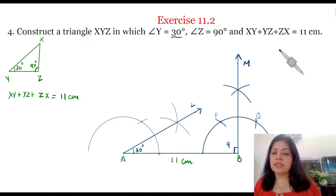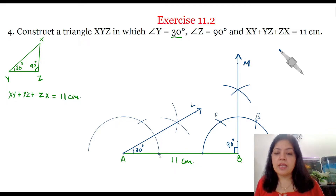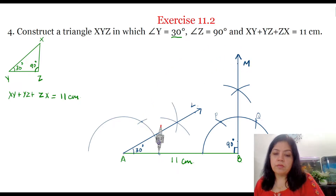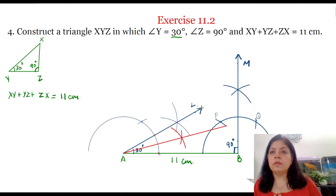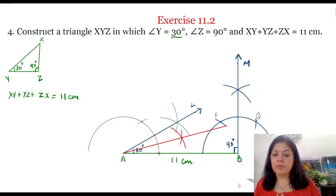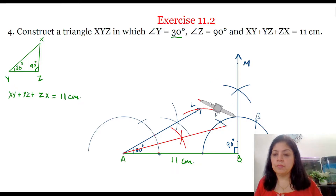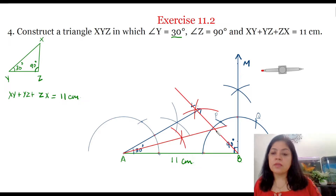Now we'll bisect angle A and angle B with the help of the compass. We'll bisect angle A first, then bisect angle B. The angle bisectors of angle A and angle B meet at a point, and this point is the vertex X of the triangle XYZ.